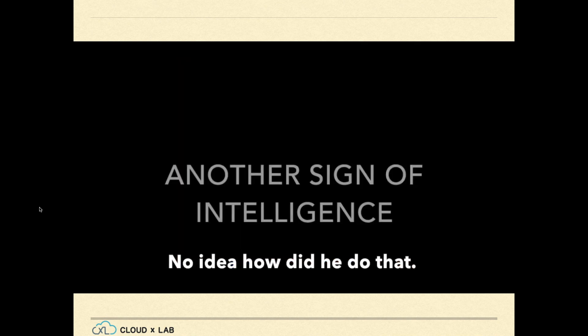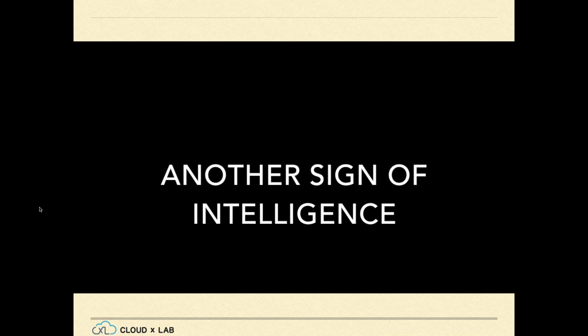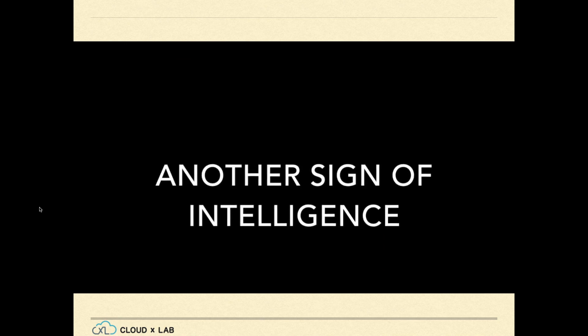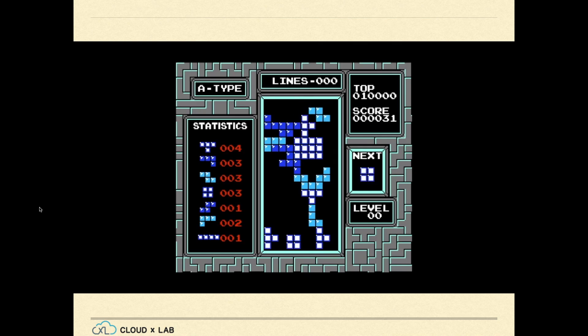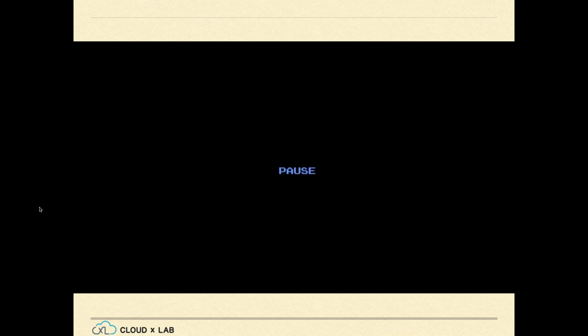Next, the program was made to play other games. For some games such as Tetris, it could not do much, but you will observe another sign of intelligence. When it is about to lose the game, it pauses the game. It realizes that pausing is the best way to retain the score — much like in childhood, if we could not win the next move, we would spoil the whole game and run away.